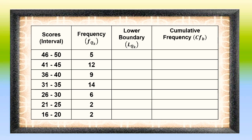In our table, we are asked to compute for the lower boundary and afterwards the cumulative frequency. Let's focus on the column for the lower boundary. To compute for the lower boundary, we subtract the lower limit of each class interval by 0.5. Starting from 16 to 20, that is 16 minus 0.5, which results to 15.5. Follow the same procedure for the second class: 20.5. Then 26 minus 0.5 is 25.5, and so on until 46 minus 0.5, which is 45.5.